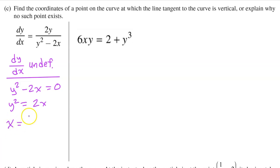Substituting this back into the original equation gives us 6 times 1/2 y² times y is equal to 2 plus y³. Multiplying by 6, we have 3, and also multiplying y² by y gives us y³, so 3y³ is equal to 2 plus y³. Subtracting y³ from both sides gives us 2y³ is equal to 2.